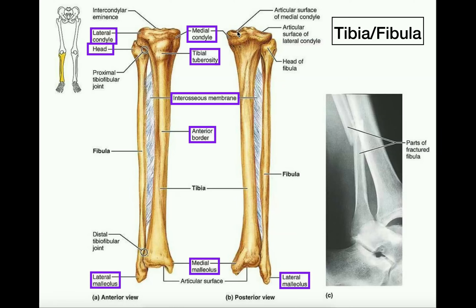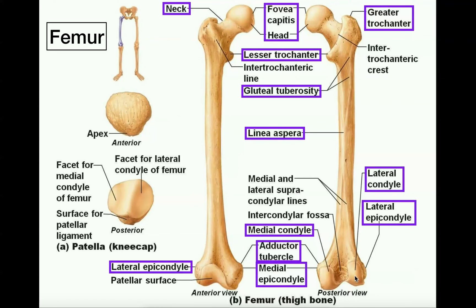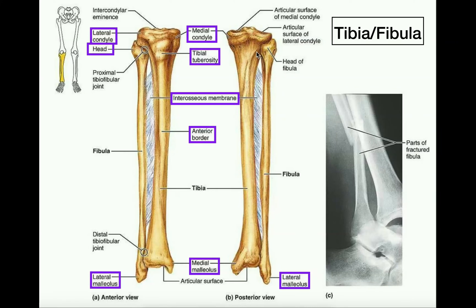The same thing goes for the lateral condyle. Looking at the posterior view of the tibia, the articular surface of the lateral condyle is a surface into which the lateral condyle of the femur sits — and that is part of what constitutes the knee joint. Also on the tibia, looking at the anterior view, we have the tibial tuberosity. This is a fairly large bony prominence on the anterior surface of the proximal tibia, and it will serve as the origin of the tibialis anterior muscle.